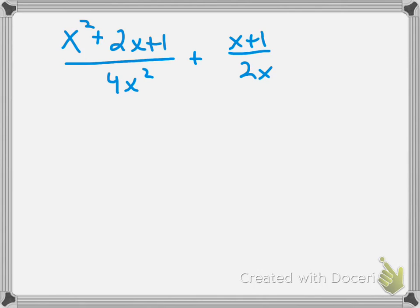Now, to combine my two denominators, my two fractions, or my two rational expressions, I need a common denominator, or a least common denominator. And we can see between the 4x squared and the 2x, my least common denominator would be a 4x squared.